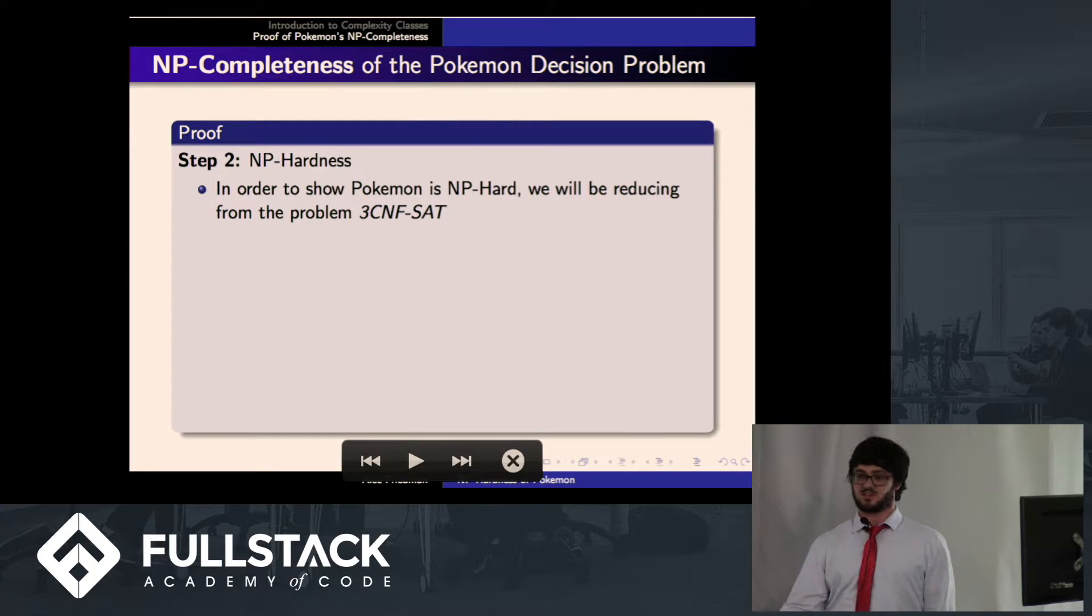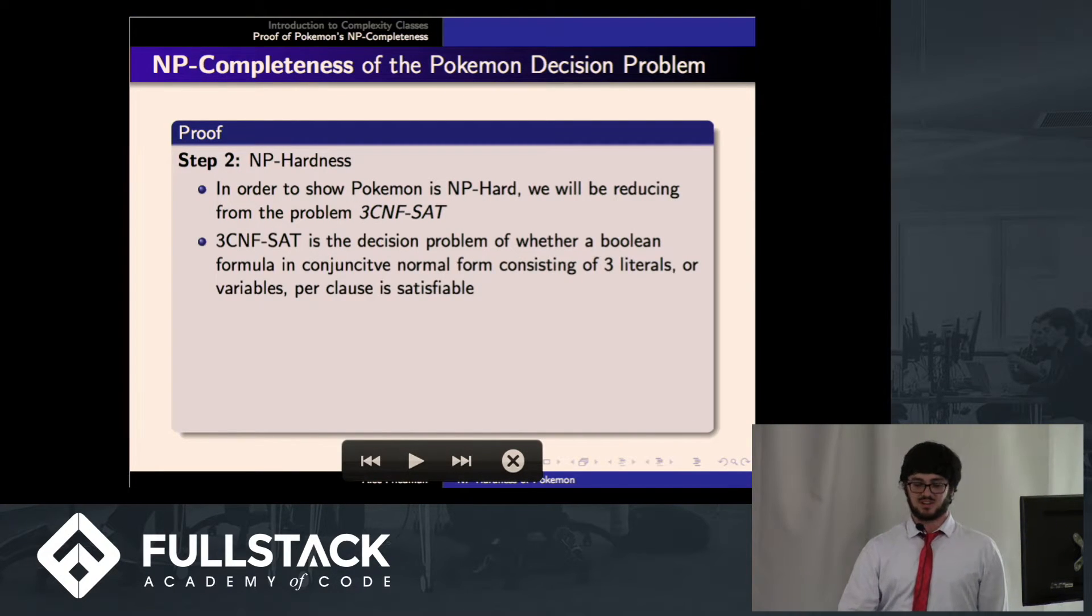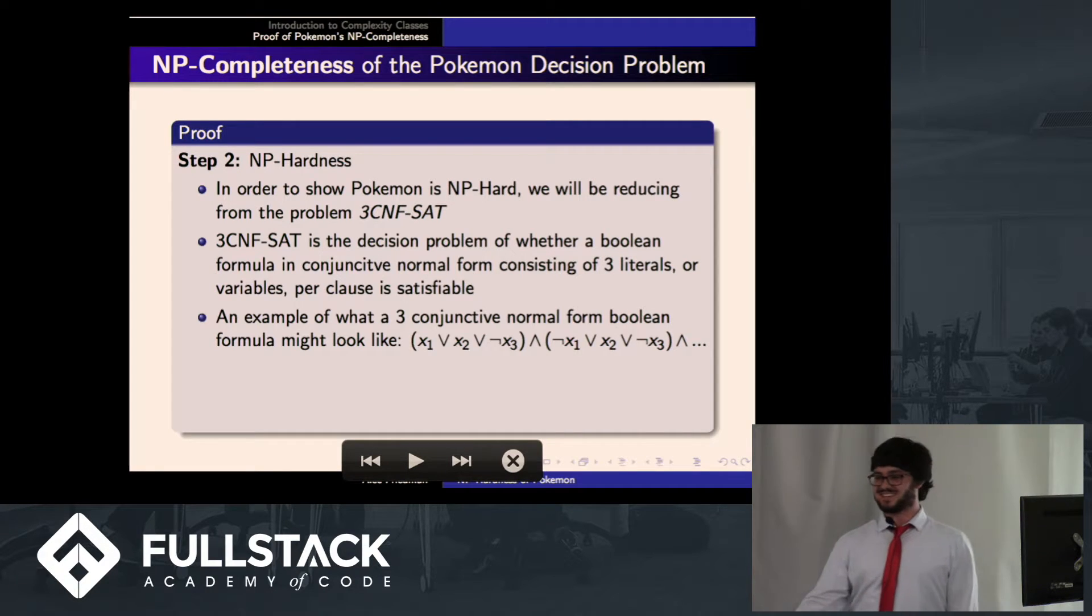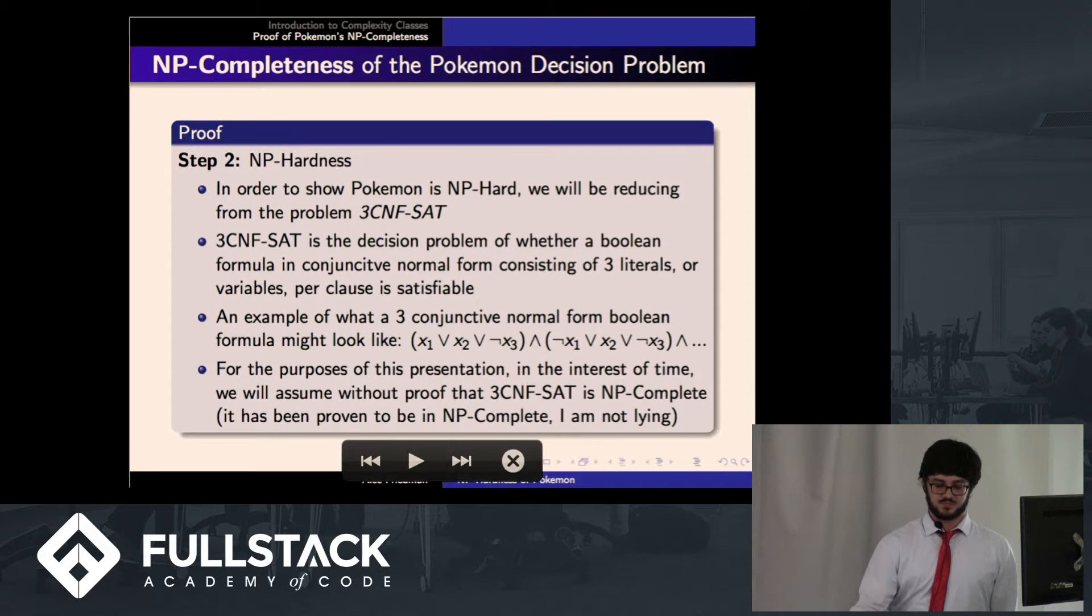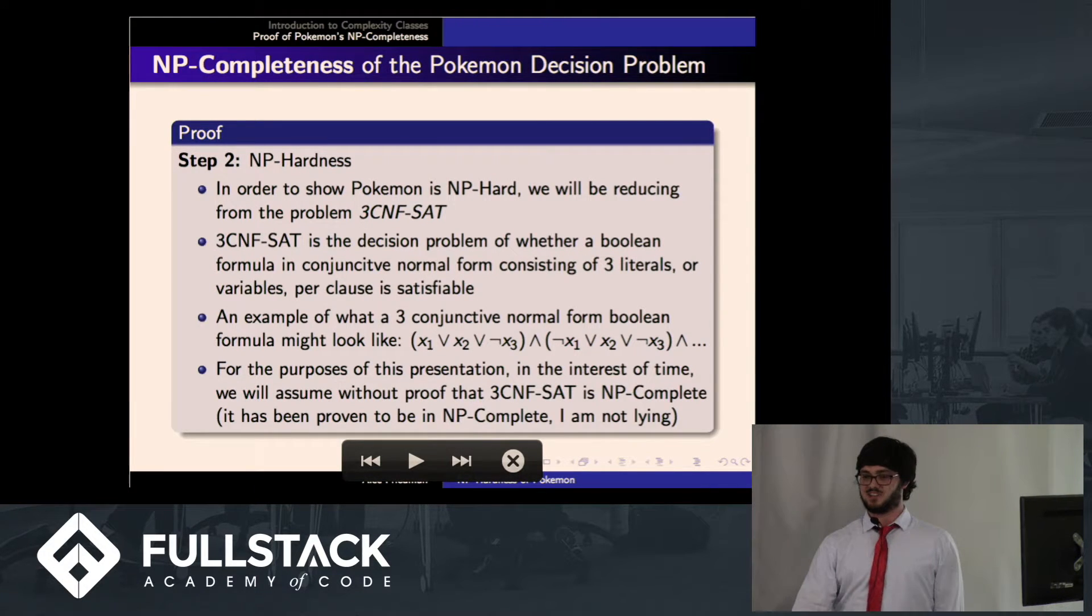Like I said, we're going to be reducing from 3CNF-SAT, or 3 Conjunctive Normal Form Satisfiability. So what is 3CNF-SAT? 3CNF-SAT is the decision problem of whether a Boolean formula in conjunctive normal form, consisting of three literals or variables per clause, is satisfiable. So I'm sure that cleared that up for a lot of you. Basically, this is what a 3CNF-SAT problem looks like. We have clauses with three variables connected by ORs. So X1 or X2 or not X3. And then each of those clauses is connected by an AND. So we could have any number of those in a 3CNF-Satisfiability problem. So for the purposes of this presentation, I'm going to tell you guys that this is definitely NP complete, and you'll have to take my word for that.